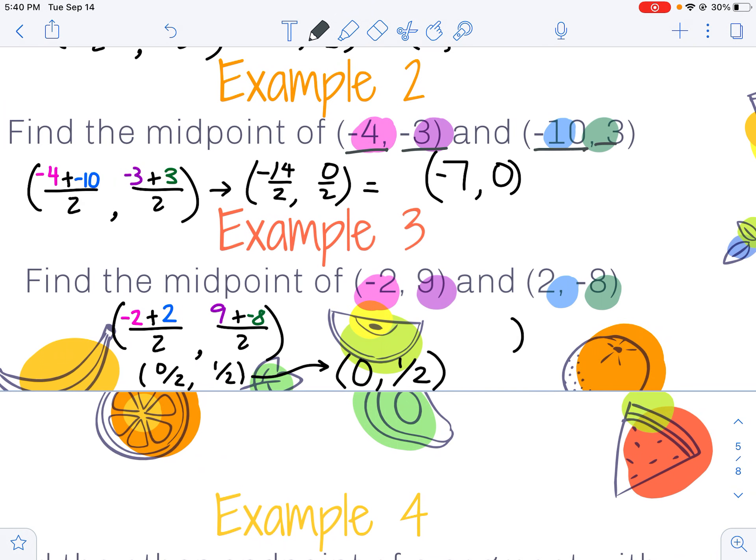My final example then, I've got negative 2, positive 9, and 2, negative 8. Negative 2 plus positive 2 divided by 2 gives me 0. 9 plus negative 8 becomes 1, divided by 2 gives me 1 half.